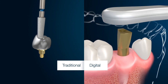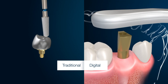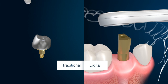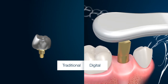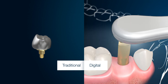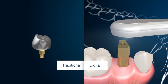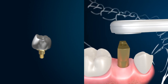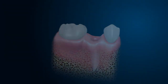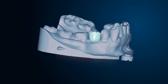Once we are ready for final restoration, planning may be done by using an intraoral scanner and scanning the scan post which is connected to the Connect abutment. With the planning complete, the final restoration may be fabricated and placed on the abutment.